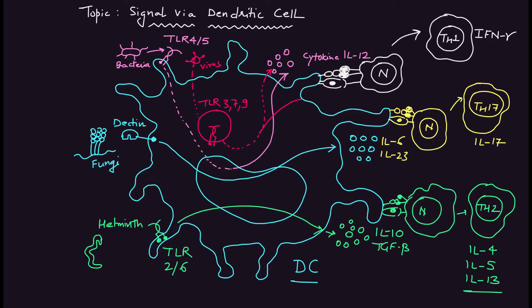This is the detailed pathway of the activation of dendritic cells via bacteria, fungi, and helminths — parasitic worms. The dendritic cell is an important part of the innate immune system. You can see how it interacts with pathogenic molecules and activates important immune system signaling pathways as well as naive T-cells. I hope this topic is now clear and you understand the function and signaling mechanism of the dendritic cell.